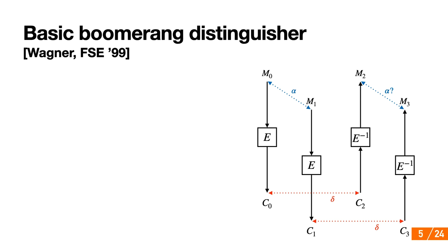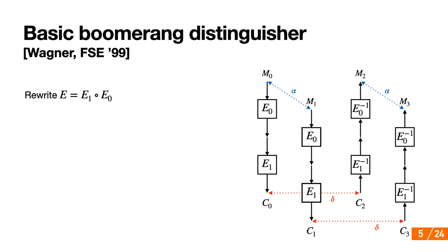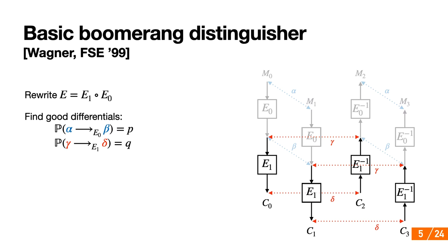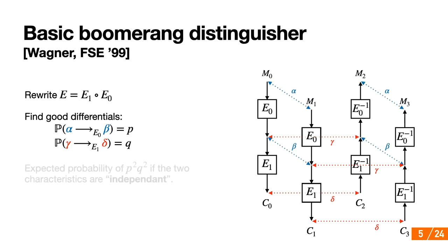Boomerang attacks have an advantage over standard differential attacks, which is that they remain efficient as long as there exist short, high-probability differential characteristics on a small number of rounds. So you don't need a high-probability differential on the whole cipher. Usually you would use two small differentials covering half of the attack rounds each. In the original approach, the cipher E is written as the composition of two subciphers E0 and E1, and you need good differentials over each part. For E0, input difference alpha leads to output difference beta with probability p, and gamma leads to delta with probability q over E1. It was thought that with probability p²q², the boomerang came back.